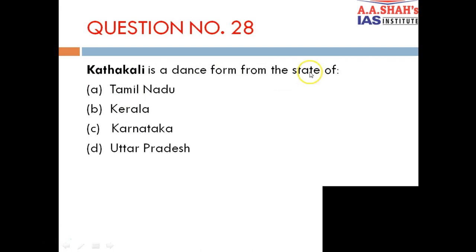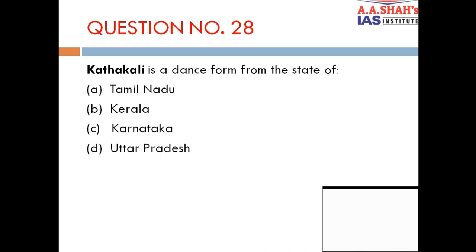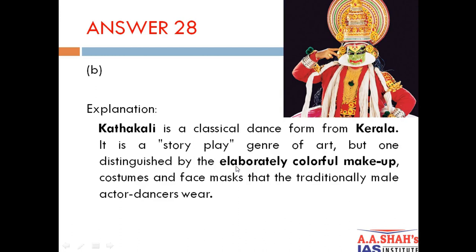Question 28: Kathakali is a dance form from the state of A. Tamil Nadu, B. Kerala, C. Karnataka, D. Uttar Pradesh. The correct answer is B — Kerala. Kathakali is a classical dance form from Kerala. It is a story-play genre of art distinguished by elaborately colourful makeup, costume and face masks. Traditionally it is performed by male actor-dancers.